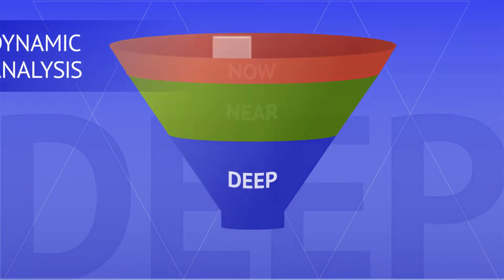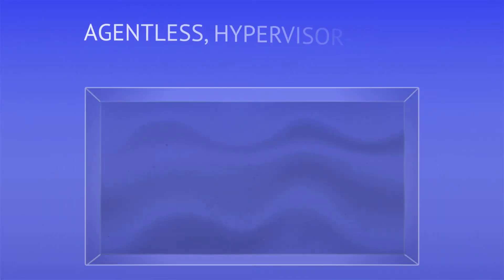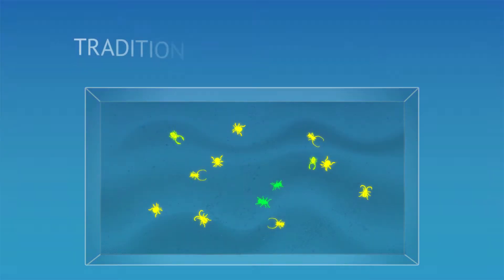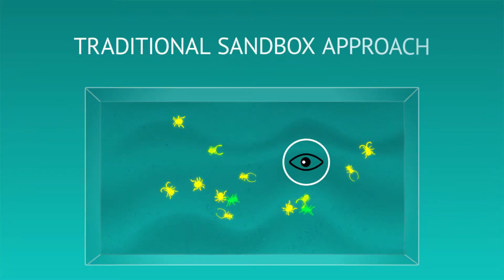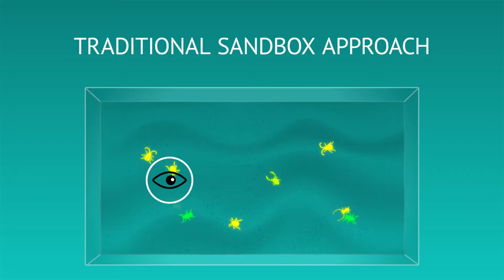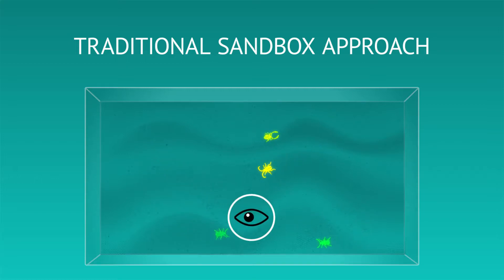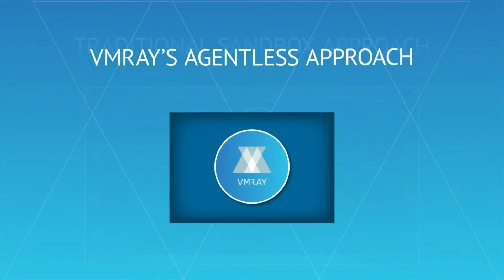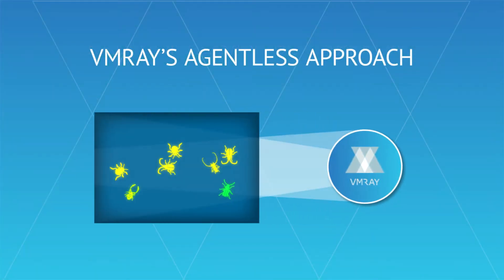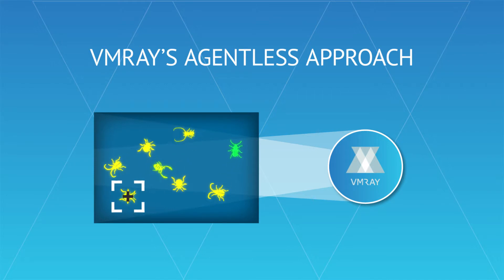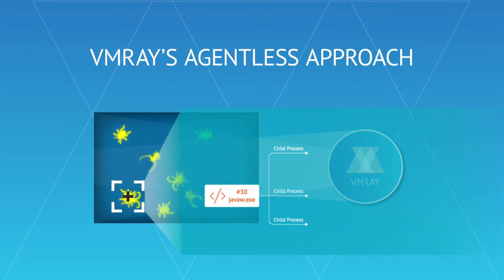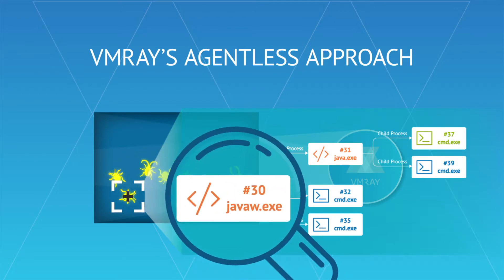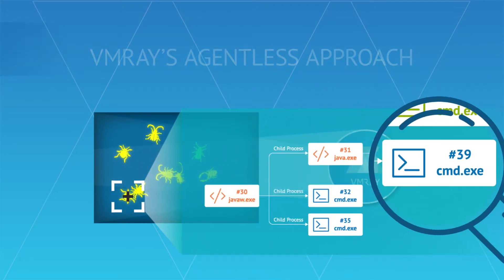The automated dynamic analysis layer uses VMRay's unique agentless, hypervisor-based sandboxing technology. Traditional approaches place monitoring agents inside the sandbox environment — these agents are easily detected by advanced malware, which can then evade analysis. But VMRay runs solely in the hypervisor, monitoring and analyzing malware behavior without modifying the analysis environment.